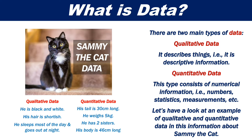Let's have a look at an example of qualitative and quantitative data in this information about Sammy the cat. The qualitative data is that he is black and white, his hair is rather short, and he sleeps most of the day and goes out at night. The quantitative data is that his tail is 30 cm long, he weighs 5 kg, he has two sisters, and his body is 46 cm long.